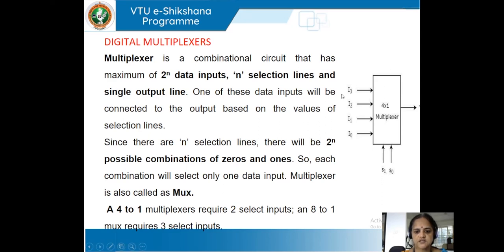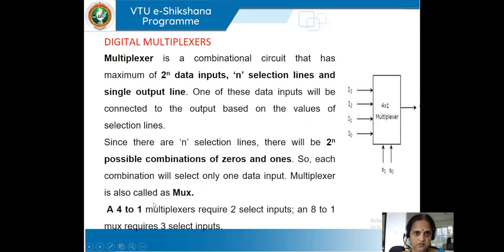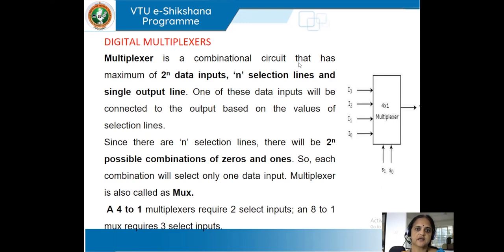As you can see in this diagram, it has around four input lines, two select lines, and only one output line. For example, a 4-to-1 multiplexer needs two select lines — it has four input lines and one output line. To choose one of these four inputs we need two select lines. Similarly, an 8-to-1 multiplexer has eight input lines, one output line, and requires three select lines to select one of the eight inputs.